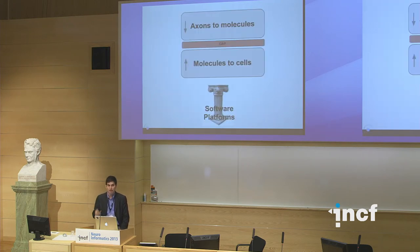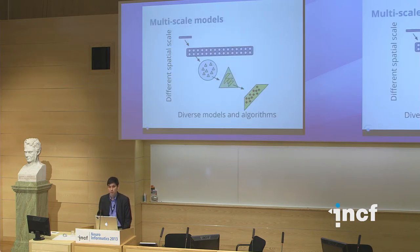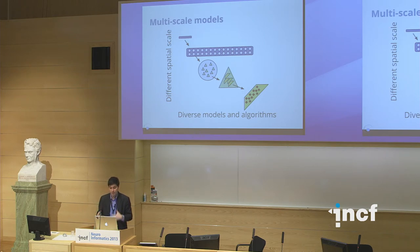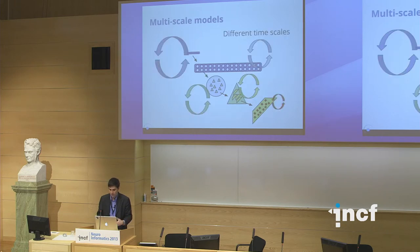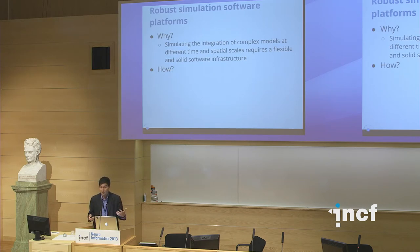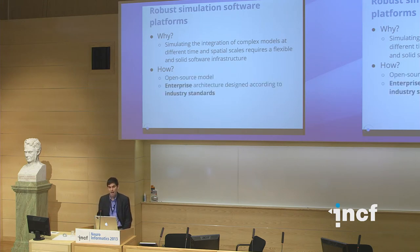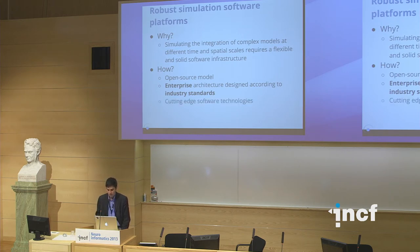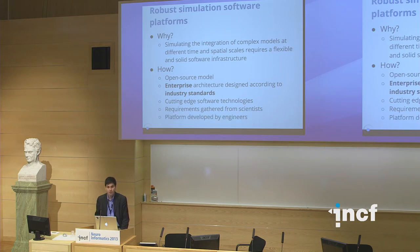To combine these results we need to get more structured, and we need open software platforms that let us do this. The models I showed exist at different spatial scales, involve diverse algorithms and code, and operate at very different time scales — so we need robust software infrastructures. As the keynote speaker noted, this is a challenge for academia. It needs to be open source, rely on standards used in industry to build modular code, use the best software technologies available, and form a collaboration between scientists in academia and more industry-minded engineers.